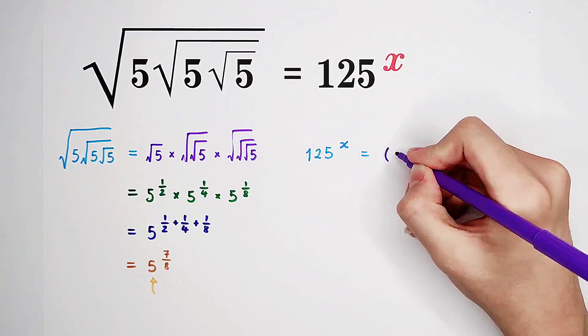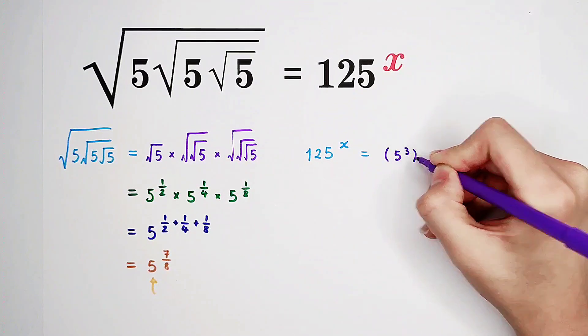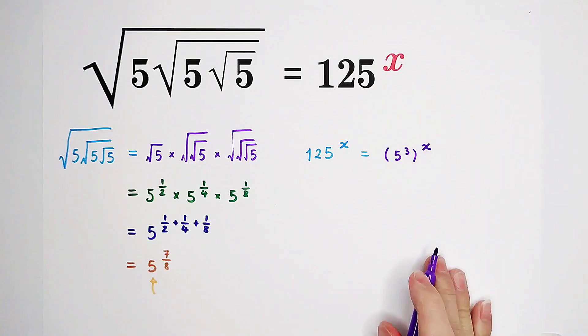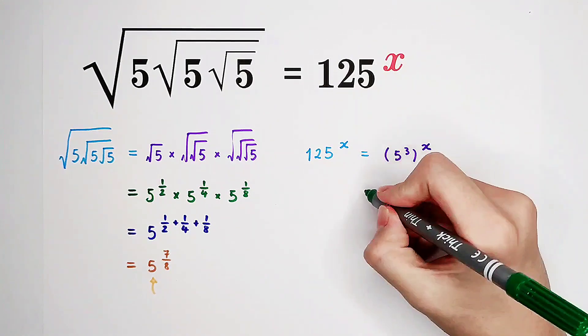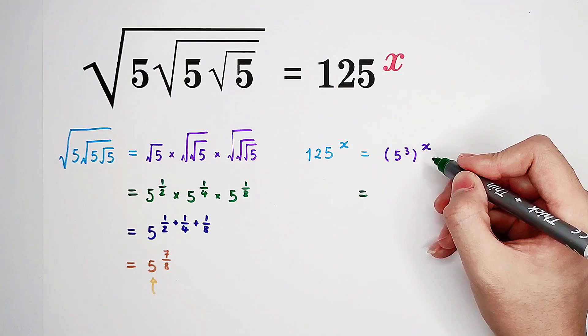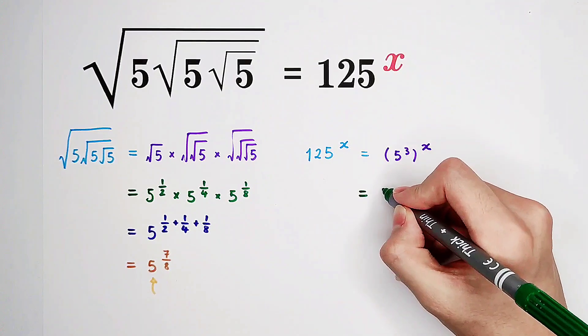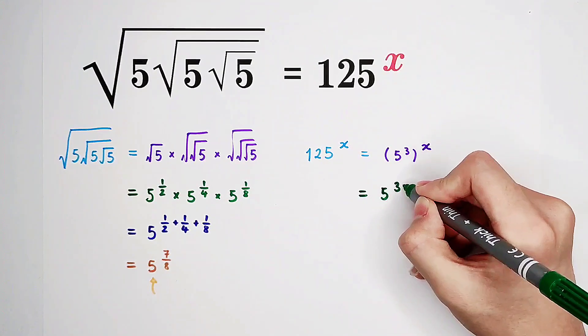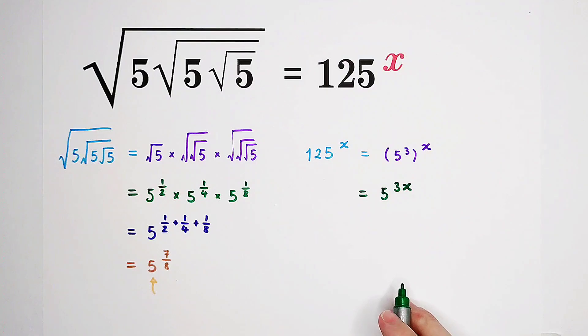5 cubed to the power of x is the same thing as 5 to the power of 3x. Very good. So now that means the right-hand side also has base 5.